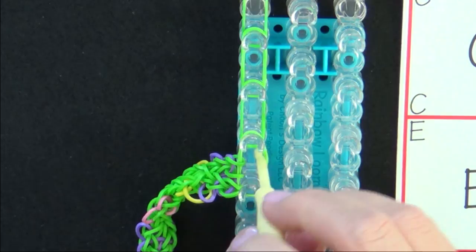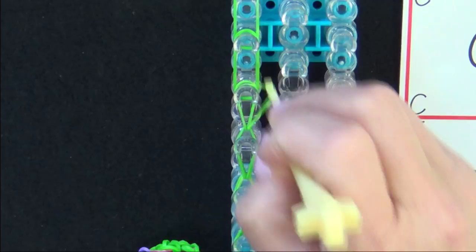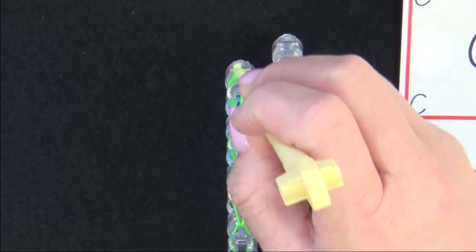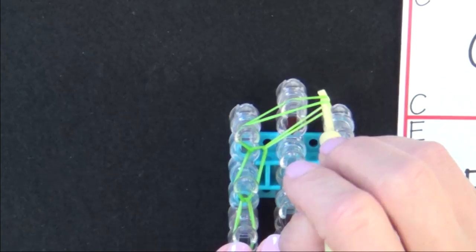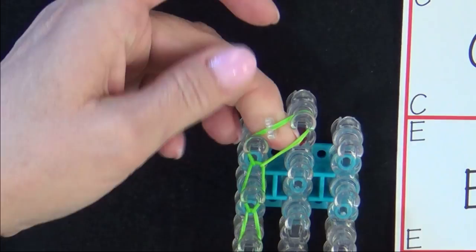Then you loop the single chain of your extension. Once you loop this last band, you'll pull it into the center. And that creates an area where you can attach your C-clip. You grab your C-clip with the open side facing forward, and place it around those bands. Then you lift your extension from the loom.